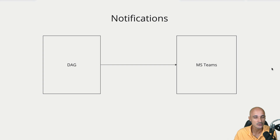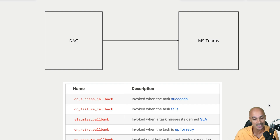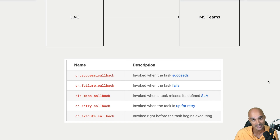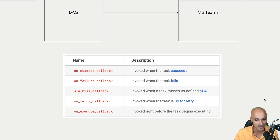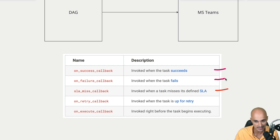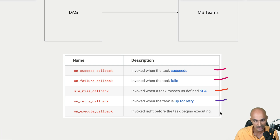To emit a notification from Airflow, you need to define a callback. Airflow has many callbacks: on_success_callback when a task or DAG succeeds, on_failure_callback when a task or DAG fails, SLA miss callback when a task misses its defined SLA, on_retry_callback when a task is up for retry, and on_execute_callback just before a task begins executing. Keep in mind that SLA miss callback is defined only at the DAG level, whereas on_success and on_failure callbacks can be defined at both the DAG and task level, while on_retry and on_execute callbacks are defined only at the task level.